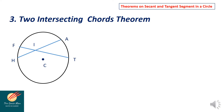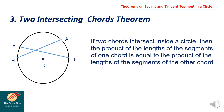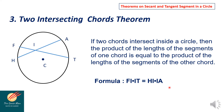The third theorem we will discuss is about the two intersecting chords theorem. If two chords intersect inside the circle, then the product of the lengths of the segments of one chord equals the product of the lengths of the segments of the other chord. So HI times IA equals FI times IT. The formula is: FI times IT equals HI times IA.